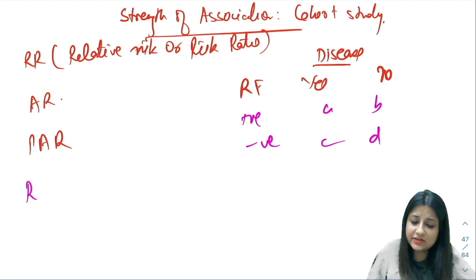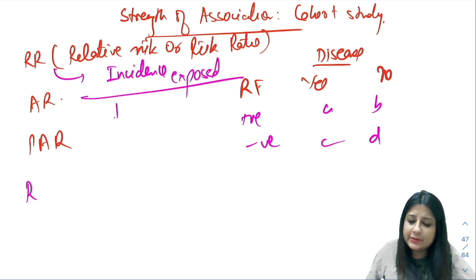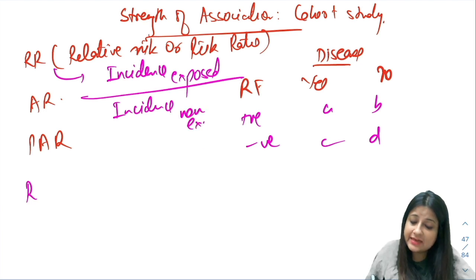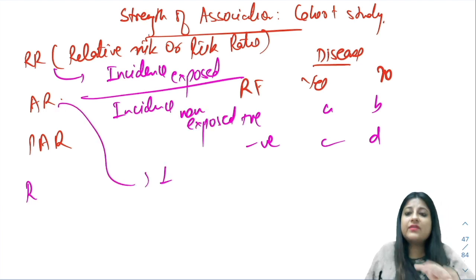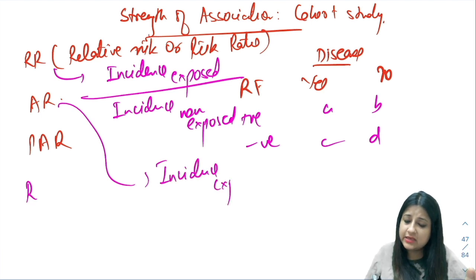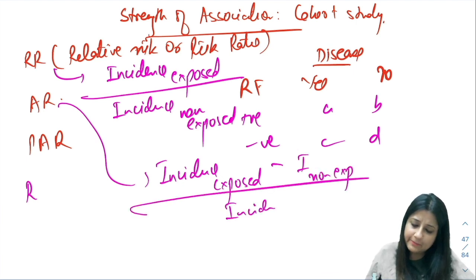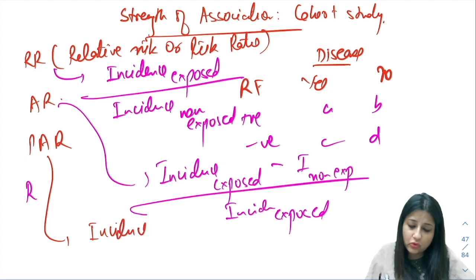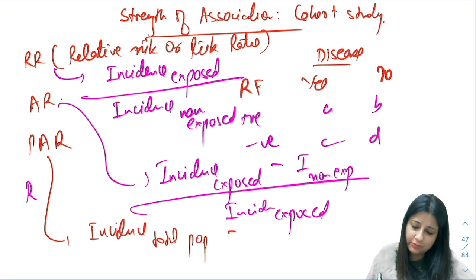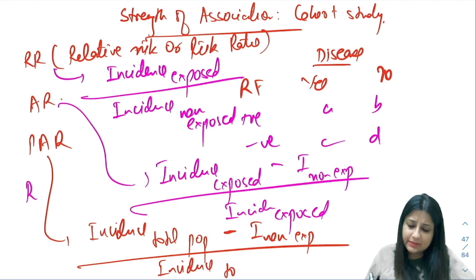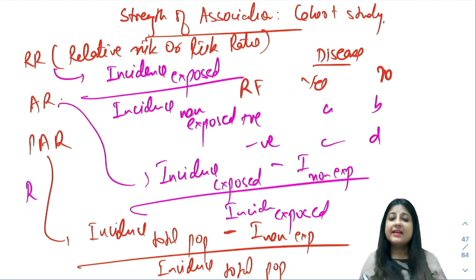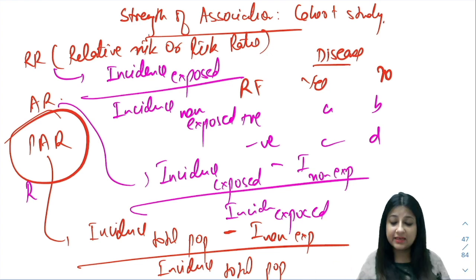Cohort studies give us incidence data. The formula for relative risk is incidence among exposed divided by incidence among non-exposed. The formula for attributable risk is incidence among exposed minus incidence among non-exposed, divided by incidence among exposed. For population attributable risk, it is incidence among total population minus incidence among non-exposed.